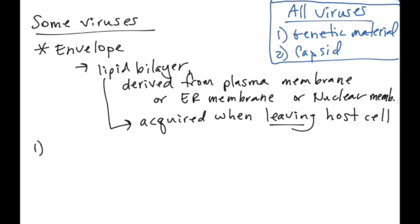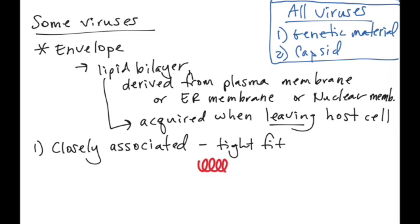Envelopes can be associated with the viral capsid in a couple of different ways. The first is that it can be closely associated. Think of this as being a tight fit. If we had a helical capsid that had an envelope, that envelope would fit right on the outside of the capsid and be right up next to it. This is what we see with viruses like Ebola and Marburg and other viruses in that particular family.